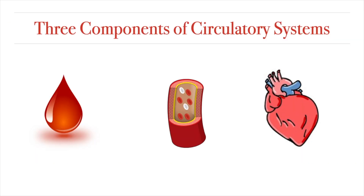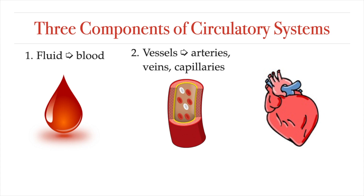The circulatory system has three main components which will be the focus of this lesson. First, there is a fluid. In the case of vertebrates like us, this fluid is called blood. Then there are the blood vessels through which this fluid can flow. We will focus on the differences between arteries, veins, and capillaries. And third, there is a pump — a heart — which keeps the blood constantly flowing and moving through those vessels.